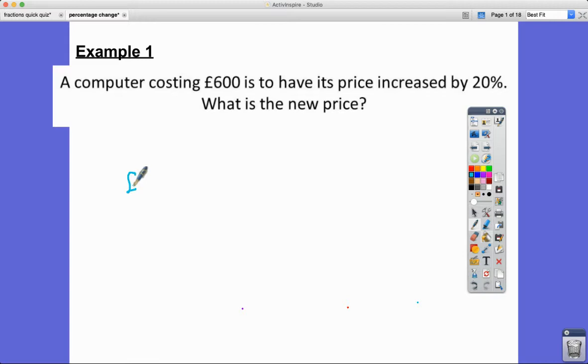A computer is costing £600 and it's to have its price increased by 20%. So let's just put that in, let's draw it as a flow diagram. So it is increased by 20% and we're trying to work out what is the new price. So we're just going to work out what goes in this box.